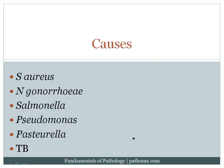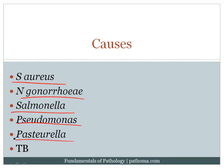Causes of osteomyelitis include Staph aureus, which is the overall most common cause. Neisseria gonorrhea can cause it, especially in sexually active young adults. Salmonella is the most common cause in sickle cell disease. Pseudomonas is important in diabetics or IV drug abusers. Pasteurella is important after dog or cat bites or scratches. TB can also cause osteomyelitis and classically involves the lumbar vertebra — called Pott's disease.